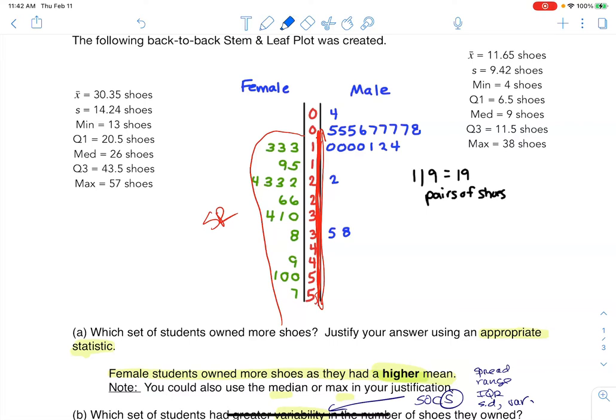And also another way to look at it is in each case, the mean is greater than the median. Whenever the mean is greater than the median, you have a skewed right distribution. I hope that helps everyone. Thanks so much. Bye.